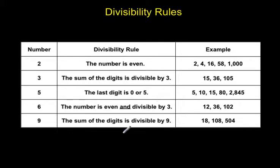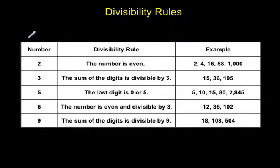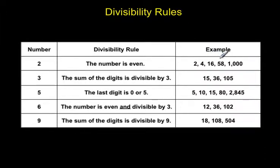There's one other way you can use to determine whether or not a number is a factor of another number, and that's using divisibility rules. These are rules where you can basically look at a number and know whether or not it is a factor. The first rule is for the number 2: you can tell if a number is divisible by 2 if the number is even — for example, 2, 4, 16, 58, 1,000. All of these numbers end in 2, 4, 6, 8, or 0. These numbers are even, which means they are divisible by 2, or I could say 2 is a factor of each of these numbers.